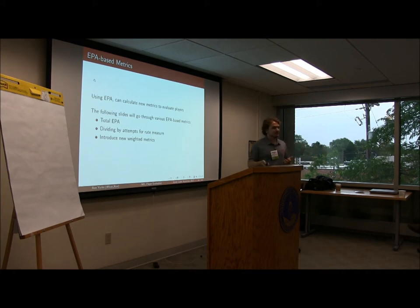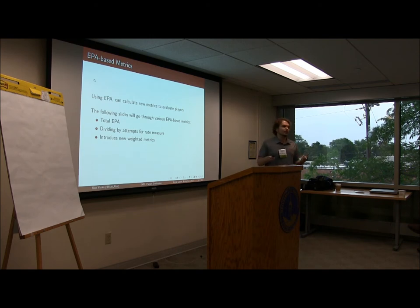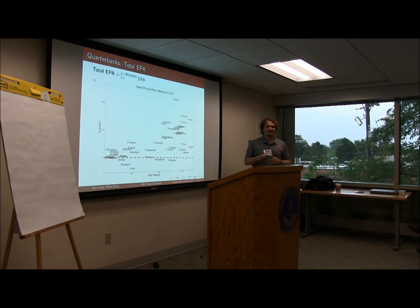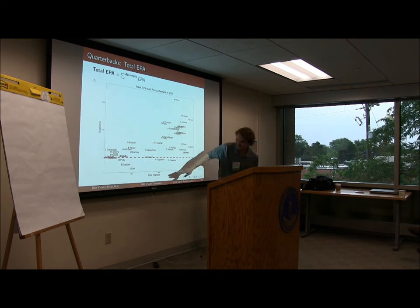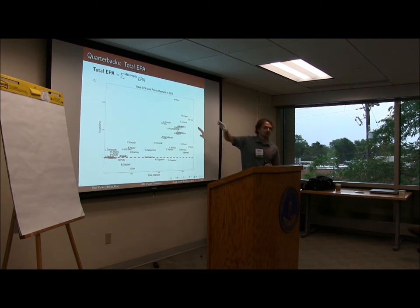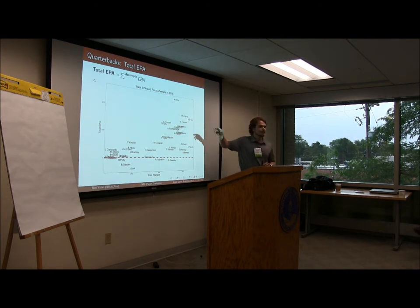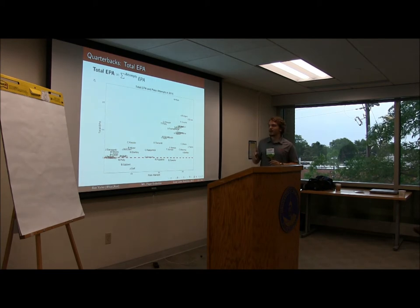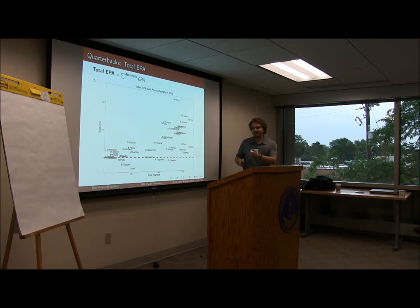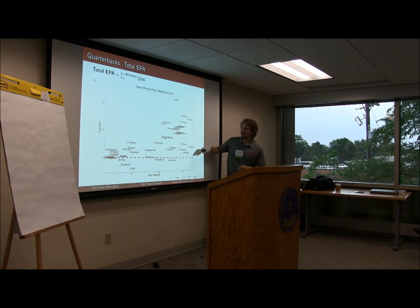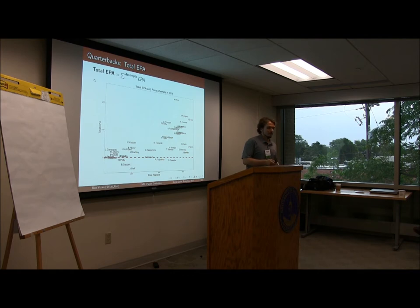Now we have expected points added and can calculate different metrics — totals, rate measures, and new weighted metrics. On the x-axis we have pass attempts, and the y-axis shows total expected points added for quarterbacks in 2016. Matt Ryan, the MVP last year, had by far the highest total expected points added of any quarterback last season. But this is a counting stat — it's a function of playing time. Guys with more pass attempts will ultimately have higher expected points added than quarterbacks with fewer attempts.